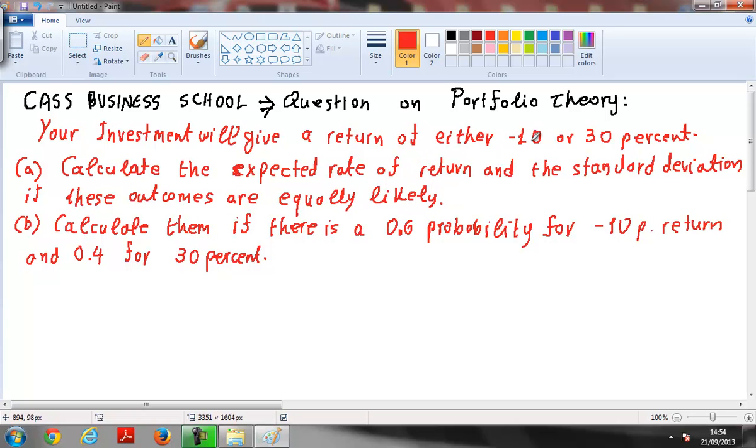So 0.5 for that, 0.5 for that. And calculate them if there is a 0.6 probability for minus 10% and 0.4 for 30%.